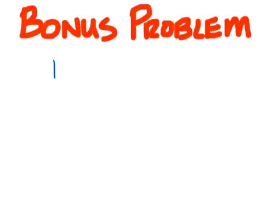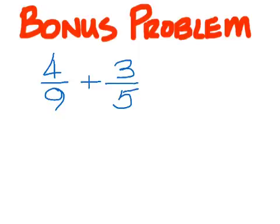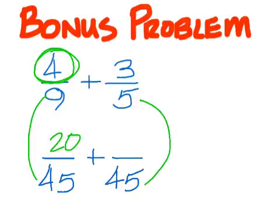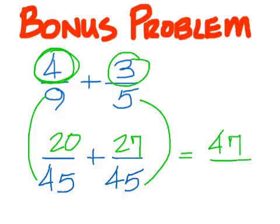Bonus problem again is four over nine plus three over five. The lowest number that nine and five will go into is forty-five. Now what do I have to multiply nine by to get forty-five? Five. So four times five is twenty. What do I multiply five by? So three times nine is twenty-seven. Twenty plus twenty-seven is forty-seven. And then you put it over forty-five.